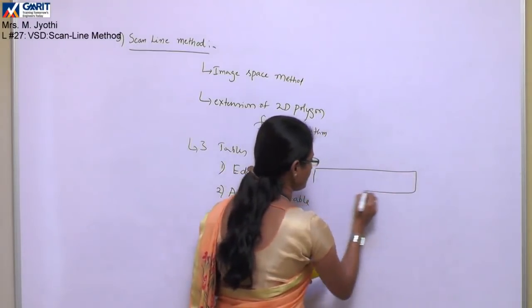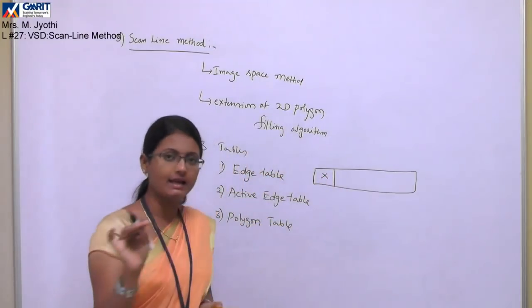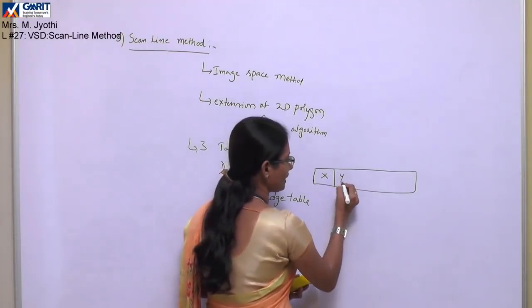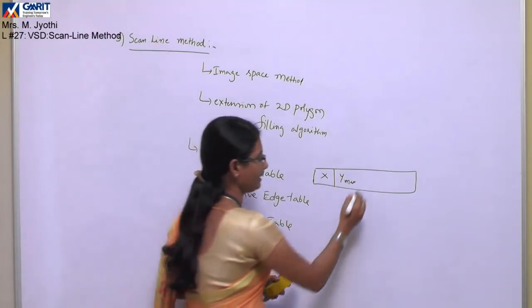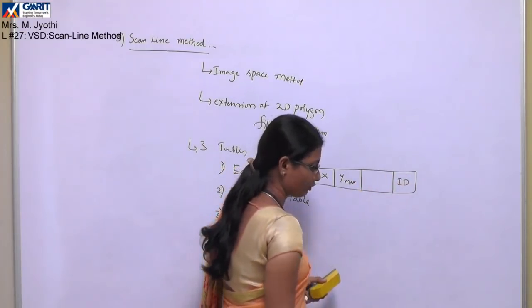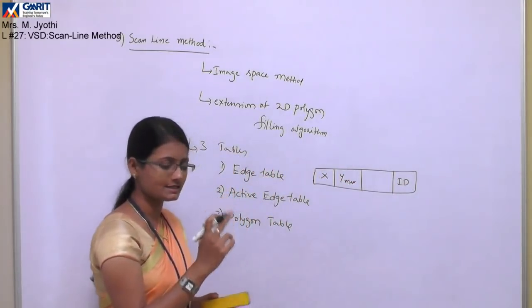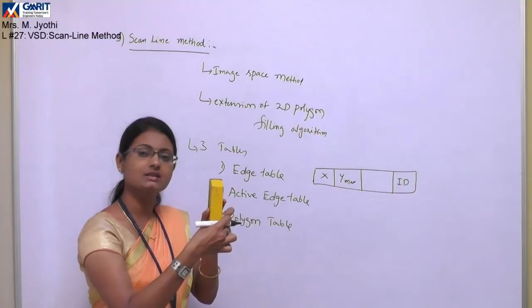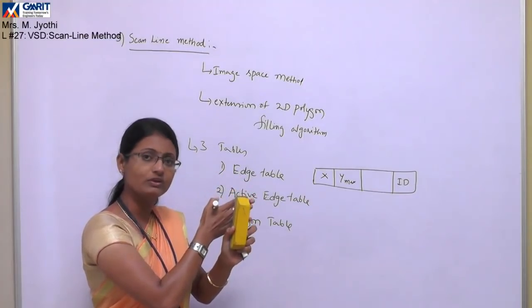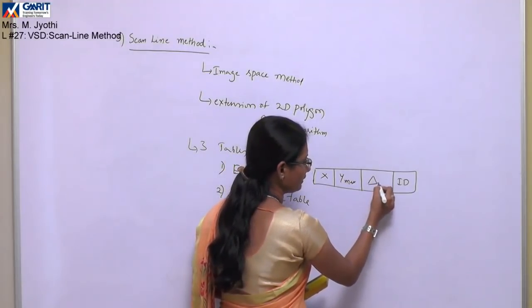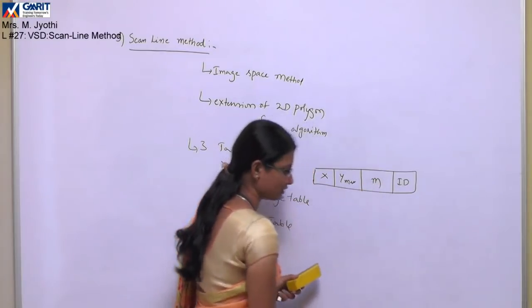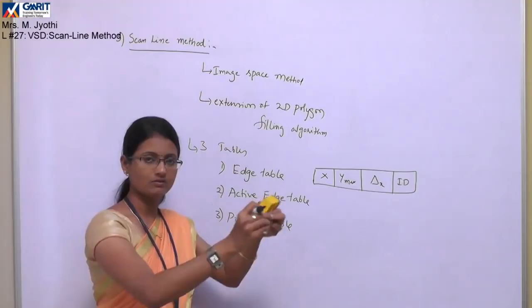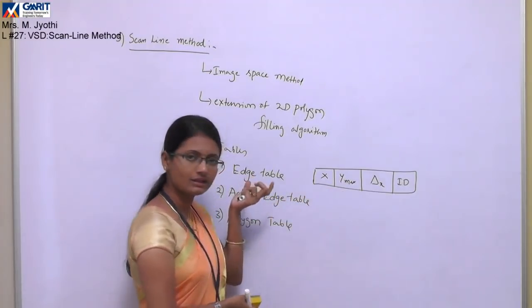The edge table consists of entries like: the x value — specifically the x value with the minimum y value for each scan line; the y-max value, indicating at what scan line the y maximum occurs; the polygon ID, since we are dealing with n number of polygon surfaces and each polygon has its own ID; the slope of that line, also referred to as delta x. Always remember, the delta y value is equal to 1 because we increment along y values in the scan line. These entries are stored in the edge table.